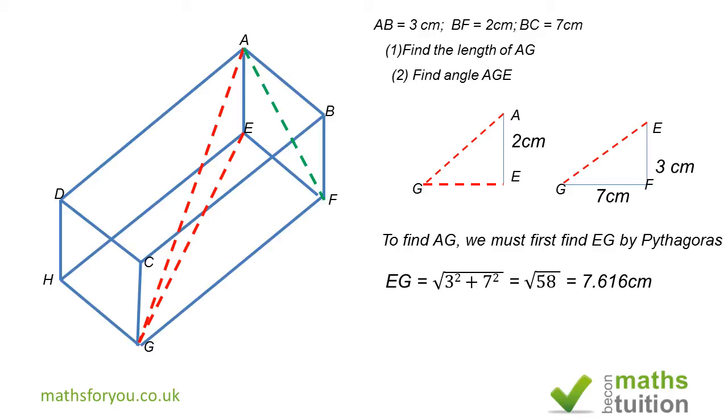Now bear in mind that if you square 7.616, you get 58. Having got EG, we now have to find AG. AEG is also a right angle triangle, so AG will be the square root of 58 plus 4, which equals the square root of 62, and that gives us 7.874 centimeters, working to 4 significant figures.